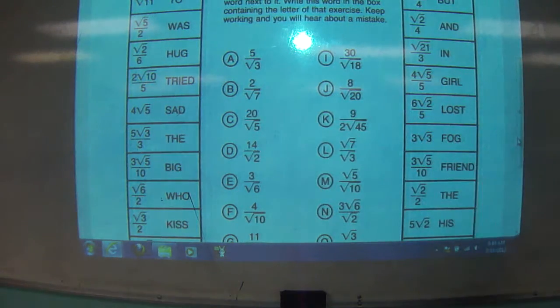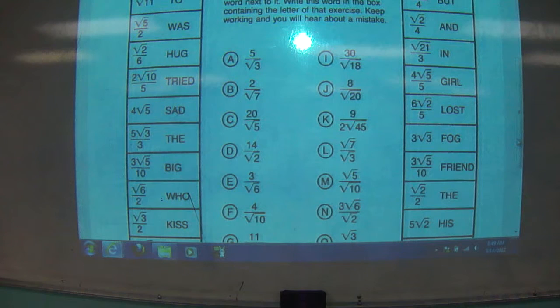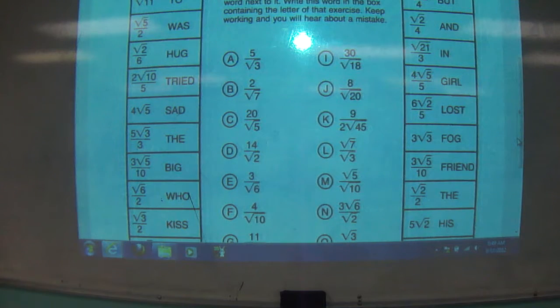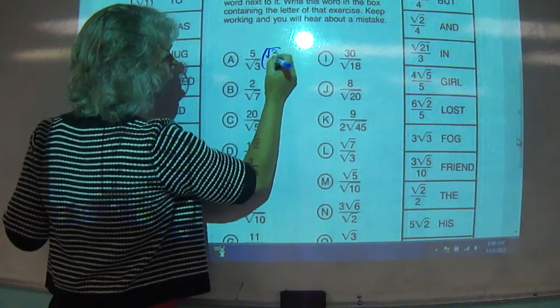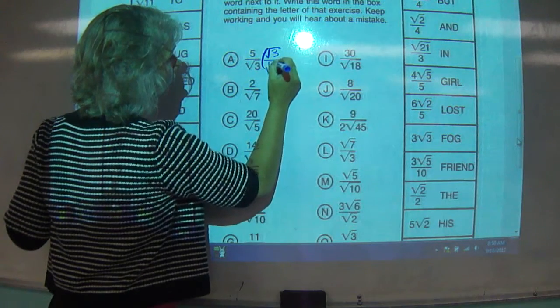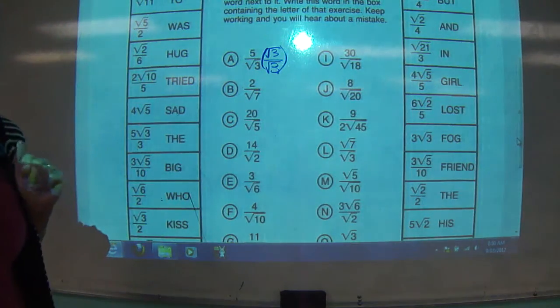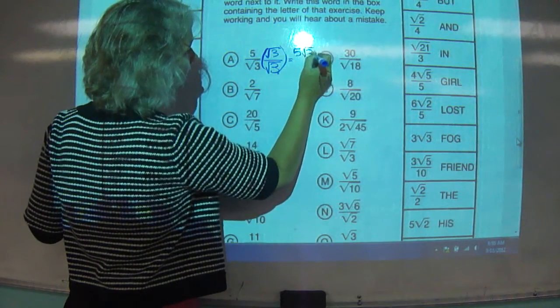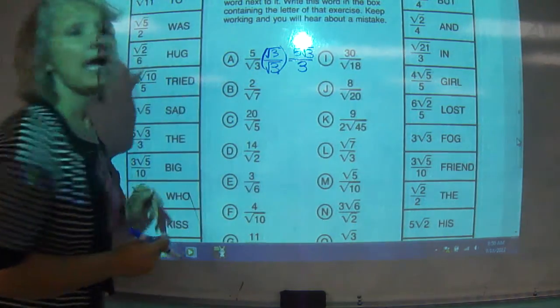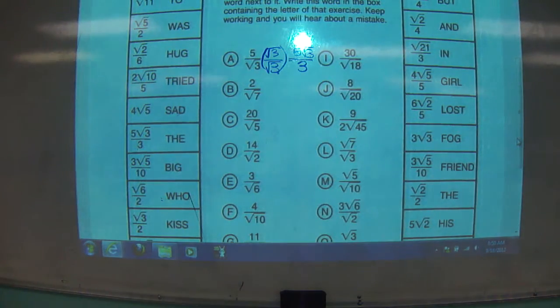So we already discovered that if you multiply a radical by itself, it's no longer a radical. We know that if you have a fraction, you can multiply any fraction by a big one, and it retains the same value. So in this situation, we can go through and multiply this by radical 3 over radical 3, and wind up with 5 radical 3 over 3, and no longer do you have a radical in the denominator.